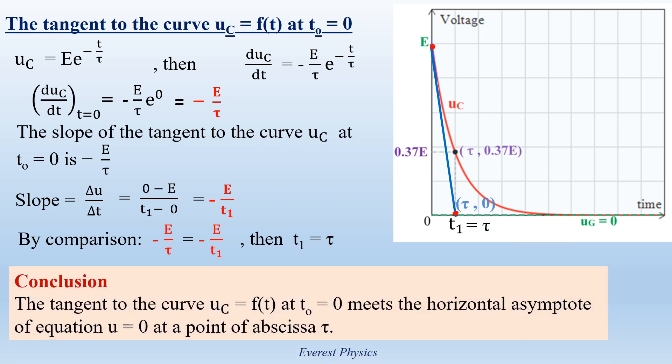Therefore, the tangent to the curve UC equals f(t) at T equals 0 meets the horizontal asymptote of equation U equals 0 at a point of abscissa tau.